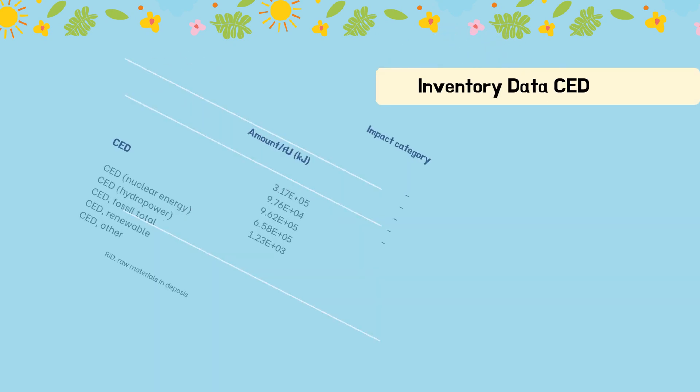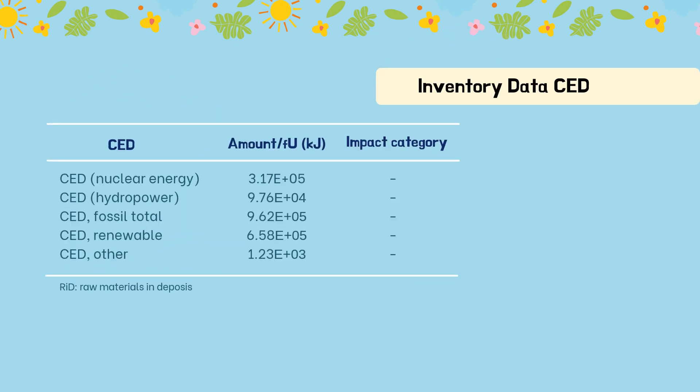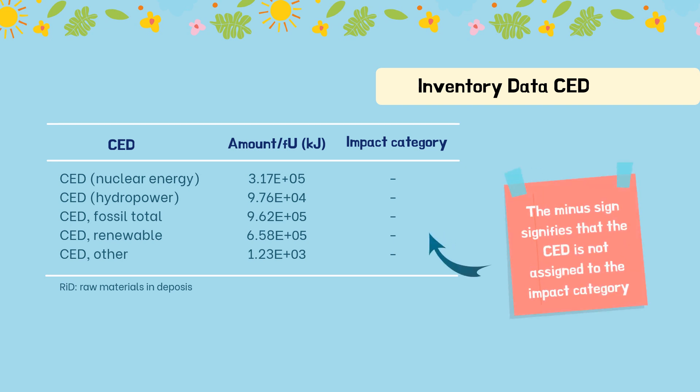As a supplement to these defined elementary flows, the LCI results for CED (Cumulative Energy Demand) and the use of natural land are included. The minus sign in this table signifies that the CED is not assigned to the impact category, because the development of a scientifically justified transfer of LCI data into impact indicators still does not allow complete use of all LCI data. For more details, you may refer to Chapter 4.